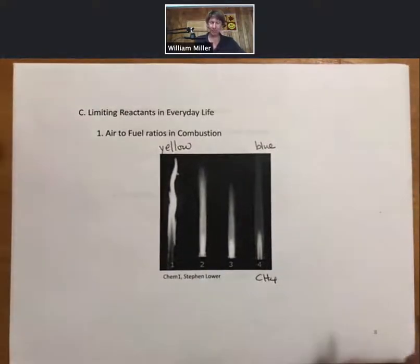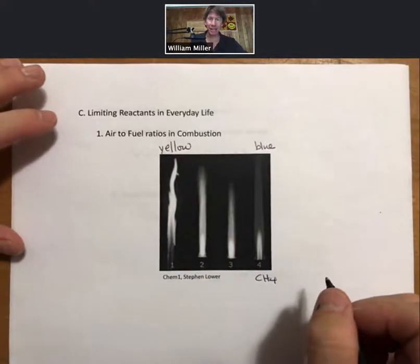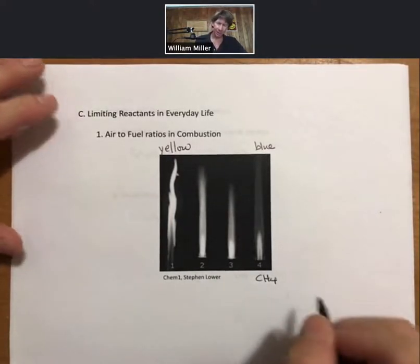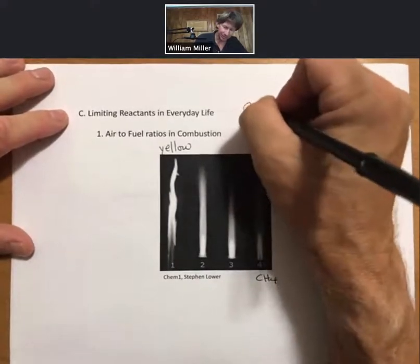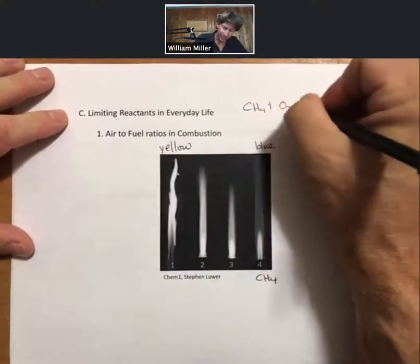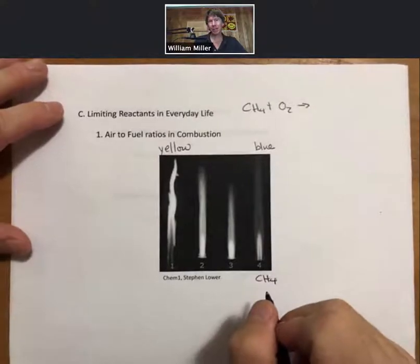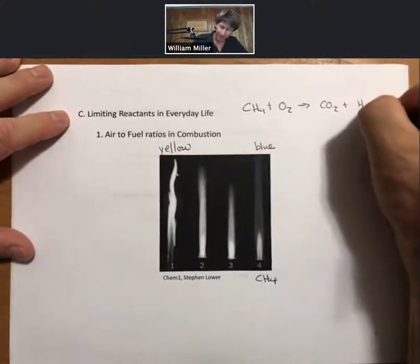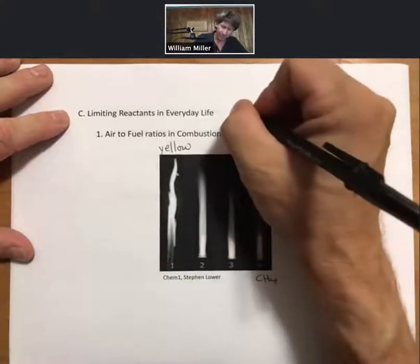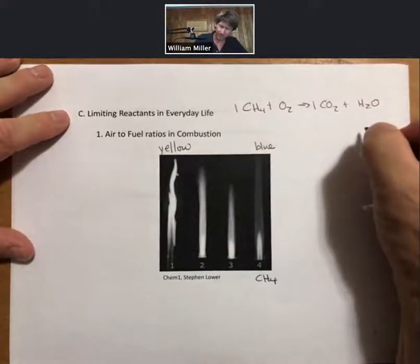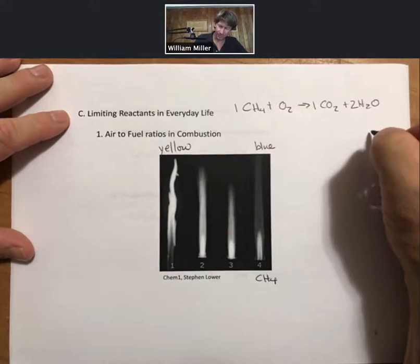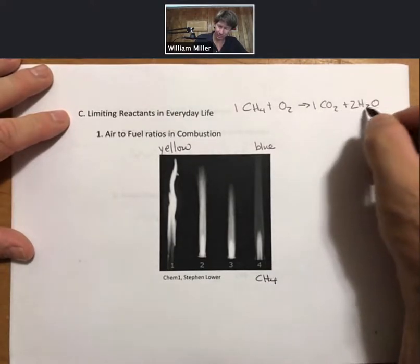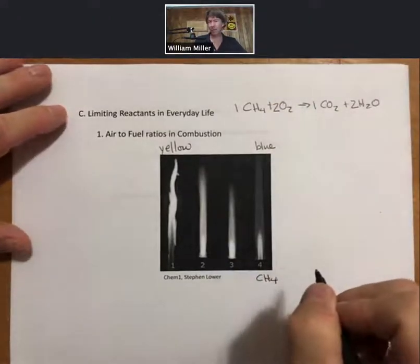This is for methane gas, also called natural gas, which is CH4. Our combustion process: methane plus oxygen goes to CO2 plus H2O. So we have one, one, two, and one, two, two. There's our balanced reaction.